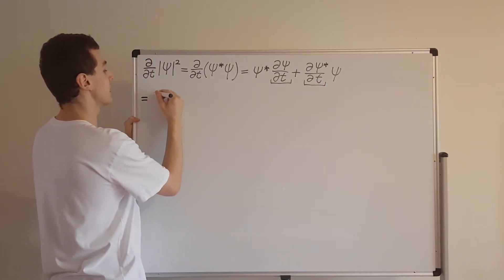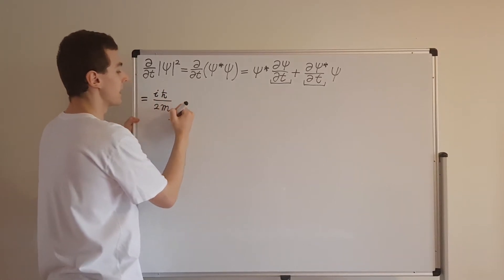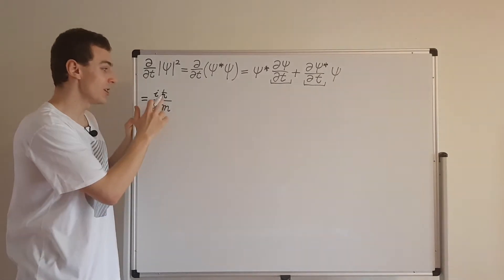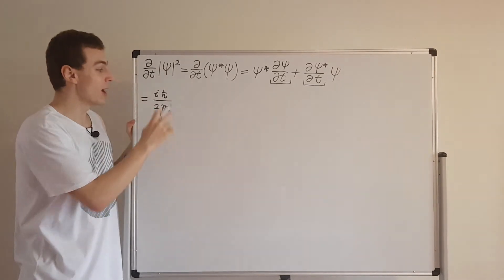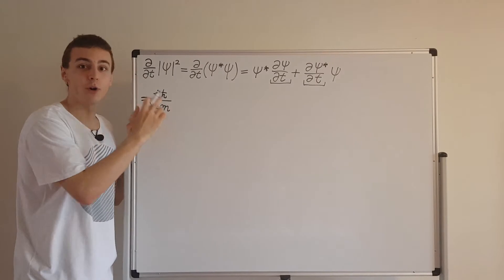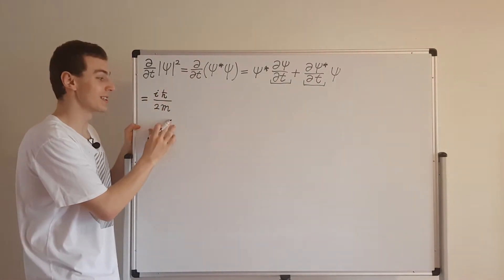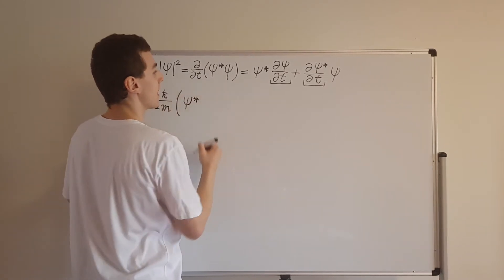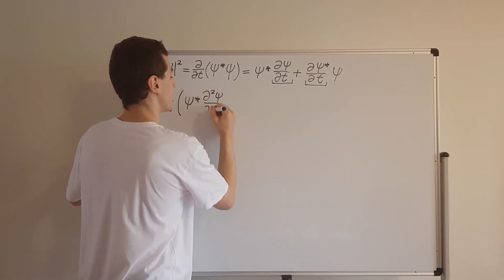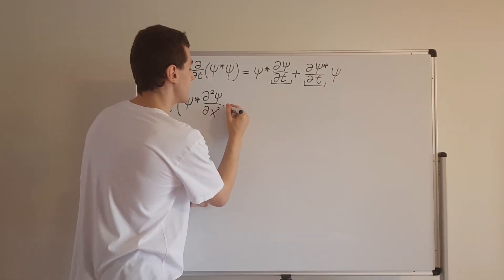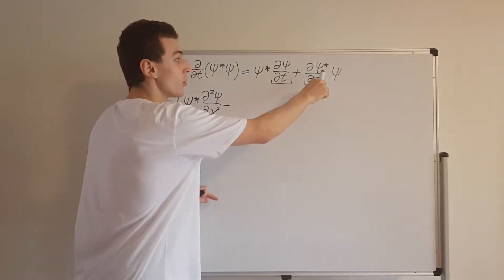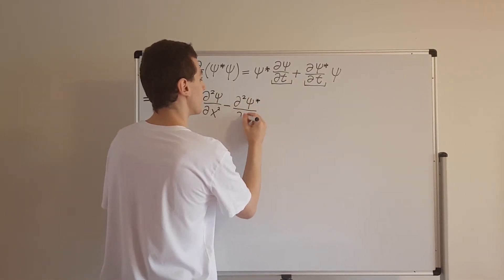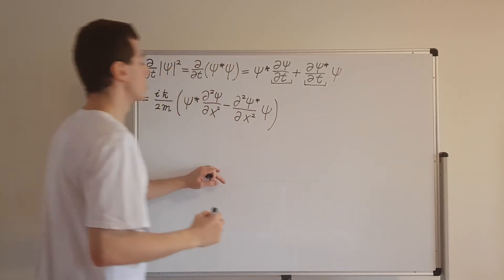Substituting the modified versions of Schrödinger's equation, what we get is i h-bar over 2m — the constants out the front — coming from the kinetic energy term. In the kinetic energy term of the Schrödinger equation we have minus h-bar squared over 2m, and here we've got an i from dividing by i h-bar, and we've lost one power of h-bar. The other terms have psi star and a second-order spatial derivative, and then a minus sign from the complex conjugate turning i into minus i, giving an analogous term with psi.